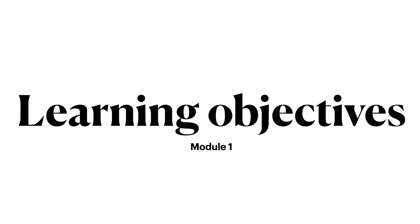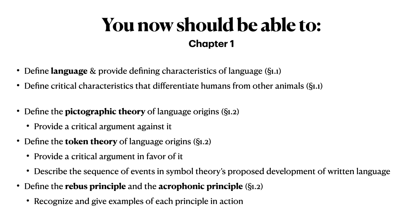Let's now reiterate the learning objectives from Module 1. Having completed Module 1, you should now be able to define language and provide defining characteristics of language. You should be able to define critical characteristics that differentiate humans from other animals. You should be able to define the pictographic theory of language origins and provide a critical argument against it. You should be able to define the token theory of language origins and provide a critical argument in favor of the token theory.